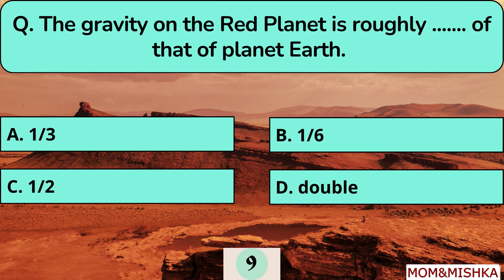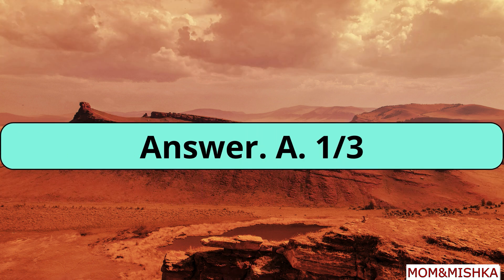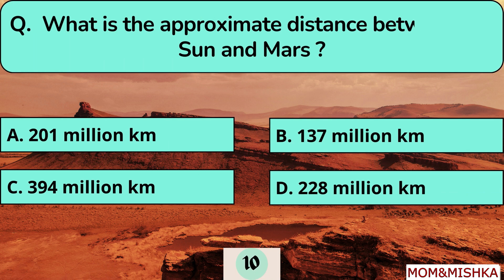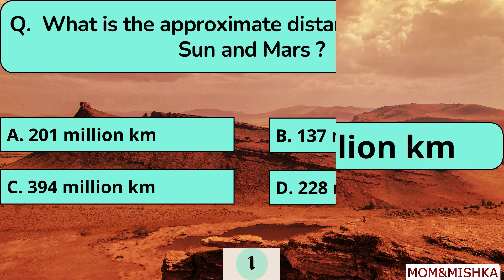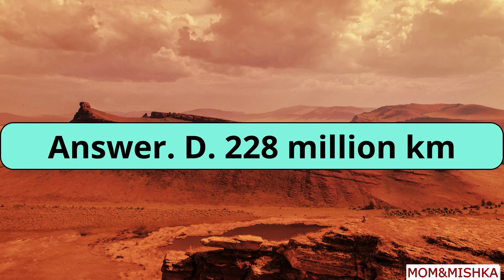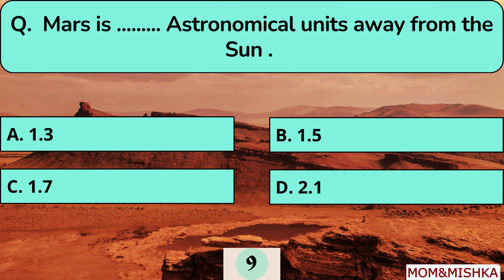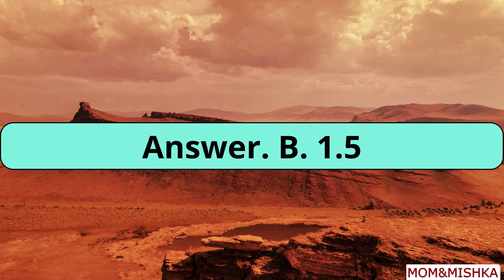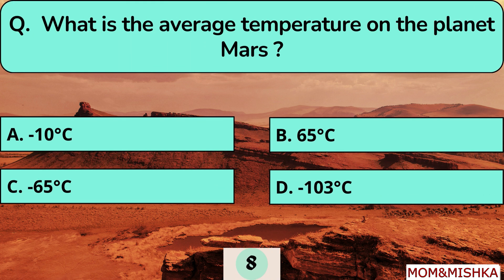The gravity on Mars is roughly one-third that of Earth. The approximate distance between the Sun and Mars is 228 million kilometers. Mars is 1.5 astronomical units away from the Sun. The average temperature on Mars is minus 65 degrees Celsius.